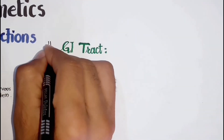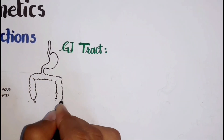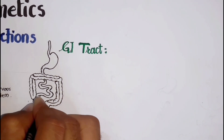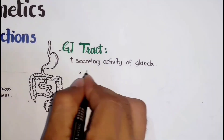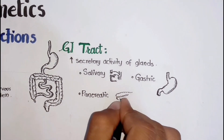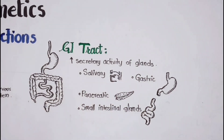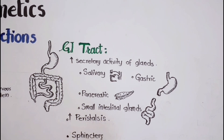The effects of direct acting parasympathomimetics on the GI tract are diverse. These agents increase the secretory activity of the digestive glands like salivary, gastric, pancreatic, and small intestinal glands. Secondly, peristaltic movement increases throughout the GI tract while most of the sphincters relax in response to these agents.